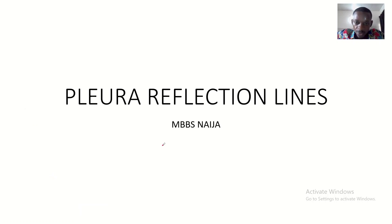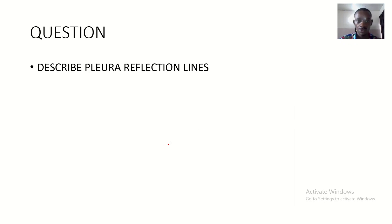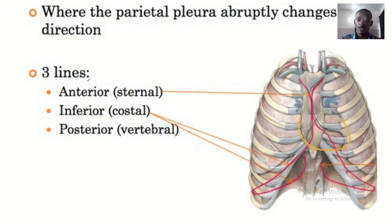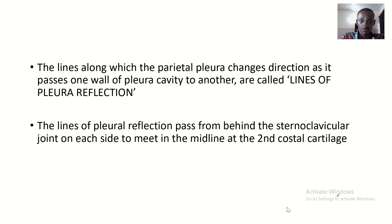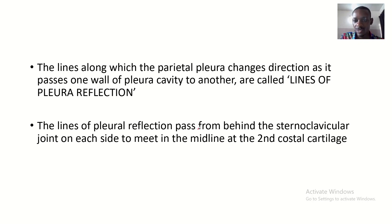Today we'll be talking about pleural reflection lines, still on thorax anatomy. The question is: describe the pleural reflection lines. On this rib image we have lines in yellow and some lines in pink — these are the lines of pleural reflection. The lungs, along which the pleura changes direction as it passes from one wall of the pleural cavity to another, are called the lines of pleural reflection.